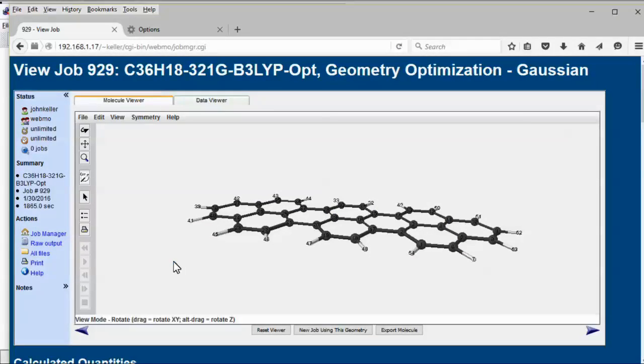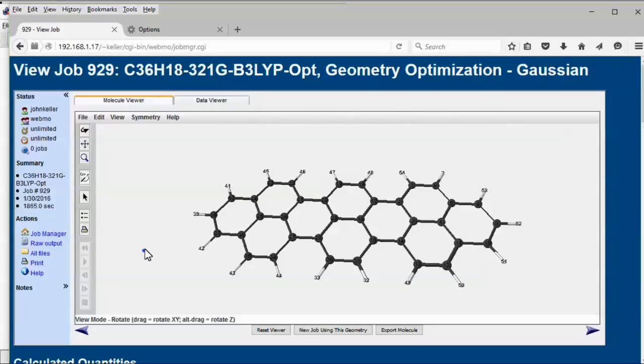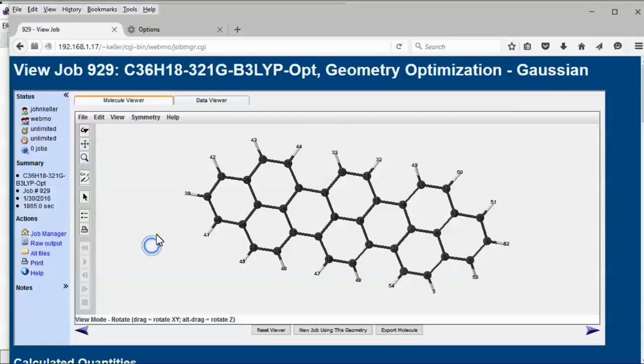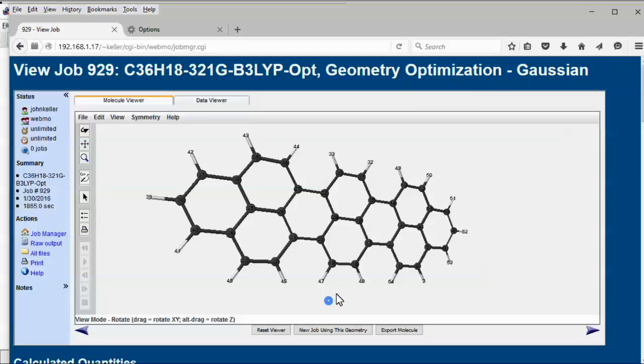How is the pi-MO visualized in Jmol? First, we will use WebMO to calculate the molecular orbitals of teropyrene. This is the optimized geometry, and we will use it for a molecular orbitals job.